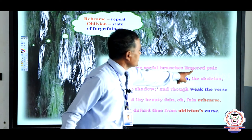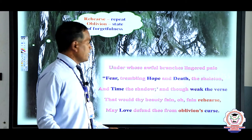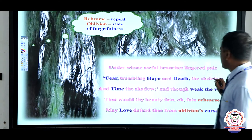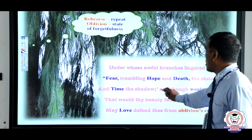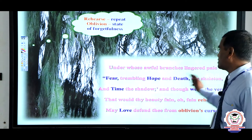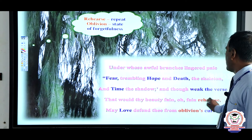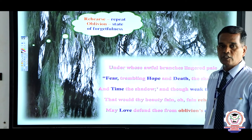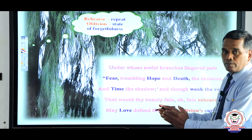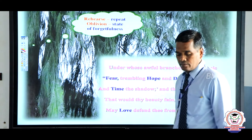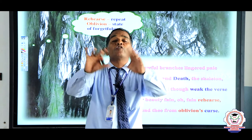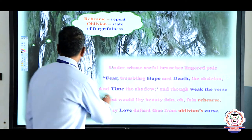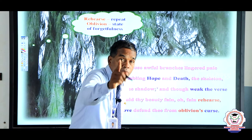The next lines: 'Under whose awful branches lingered pale fear, trembling hope, and death the skeleton, and time the shadow.' She talks about death, personifying it. These words — pale fear, trembling hope, death the skeleton, time the shadow — are all synonymous with death, explaining what kind of death she is going to face.